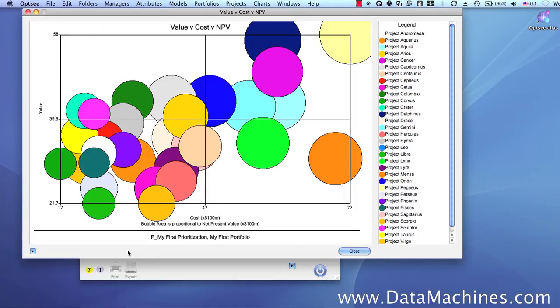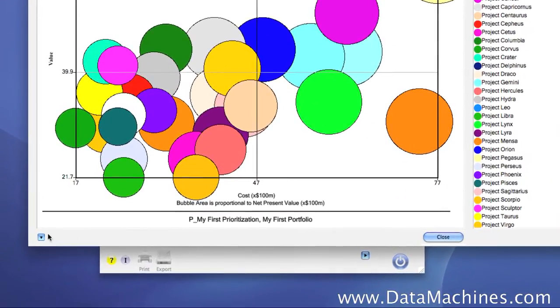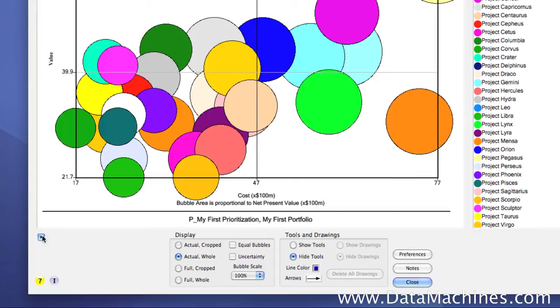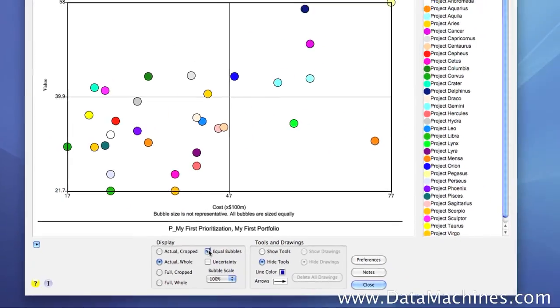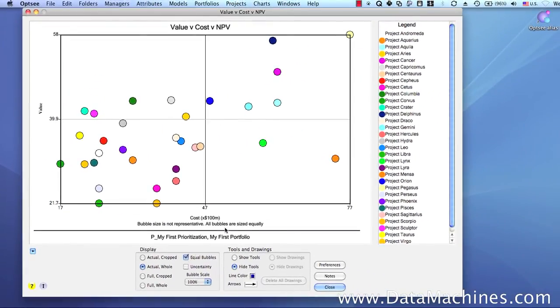We can toggle open the bottom of the form to get some different looks at this portfolio. One thing that is useful is to turn it into a scatter chart just to see the locations of the projects in the XY axis plane, and we do this by clicking the Equal Bubbles checkbox.